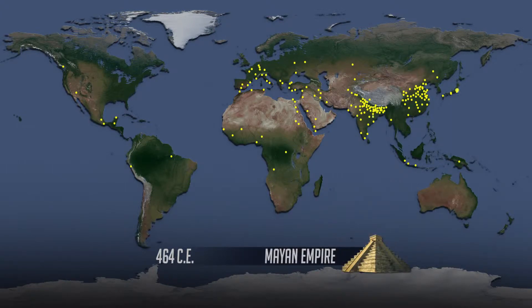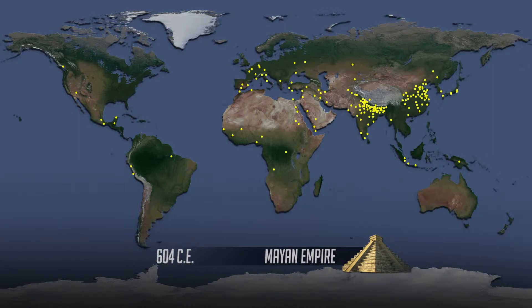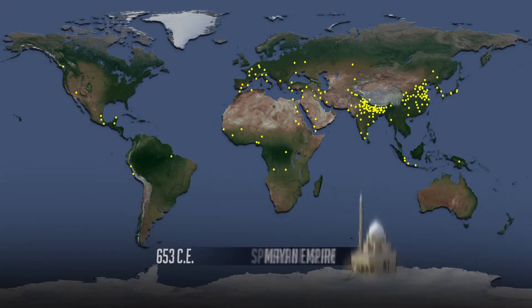A population's composition may be described in terms of basic demographic features and by features of the population like social and economic context, language, education, occupation, ethnicity, religion, income, and wealth.